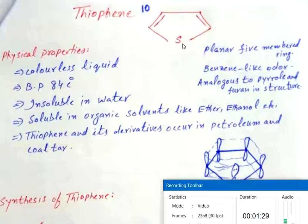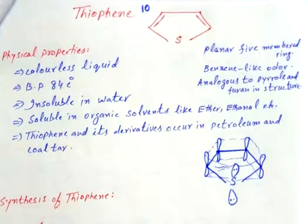Thiophene naturally occurs in coal tar with benzene and other organic compounds. Thiophene is a toxic, flammable liquid. It is insoluble in water but soluble in most organic solvents.